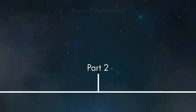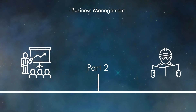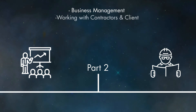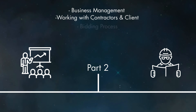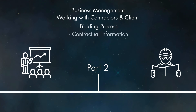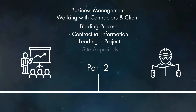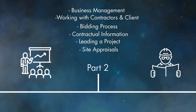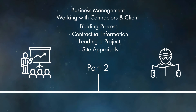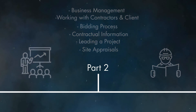Having completed your master's in architecture, this is when your potential career as an architect truly begins, taking a placement at a firm that you could potentially work at indefinitely. During this time you will build on the information you learned during your Part 1 placement — learning more about contractual information, leading projects, working with clients and contractors, site appraisals, working with the local planning authority, and overall refining and developing your skills at designing to a brief and working for a client.